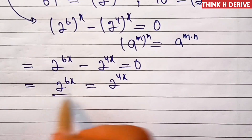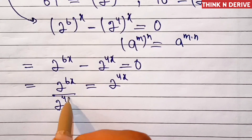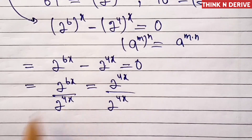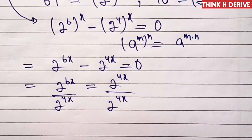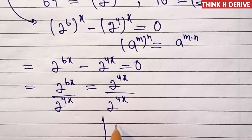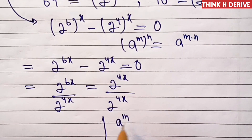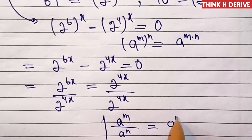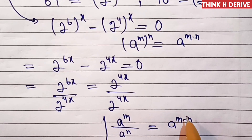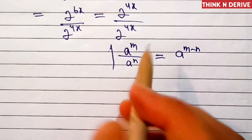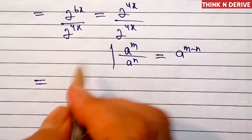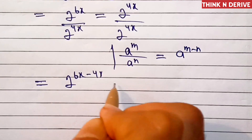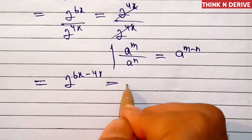Now divide both sides by 2 power 4x. We'll apply a rule here: a power m divided by a power n is equal to a power (m minus n). So this can be written as 2 power (6x minus 4x) equal to 1.